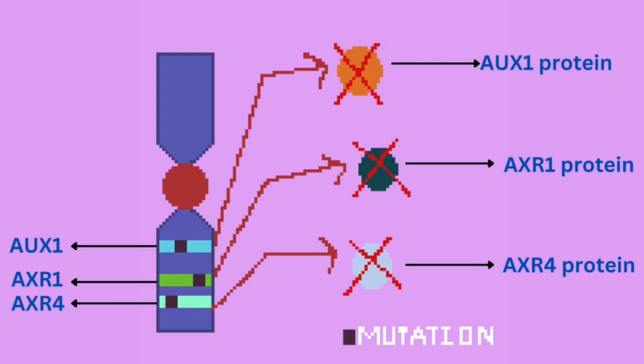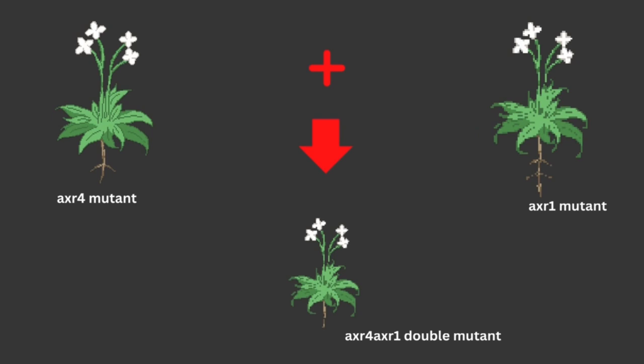Therefore, there will be a lack in the production of AXR4, AXR1, and AUX1 proteins, leading to reduction in the production of auxin and differences in auxin sensitivity. The genetic relationships between AXR4, AXR1, and AUX1 were characterized using double mutant plants. The roots of AXR4/AXR1 double mutants are more resistant to auxin, producing fewer lateral roots than either of the single parent mutants.